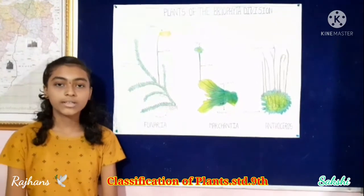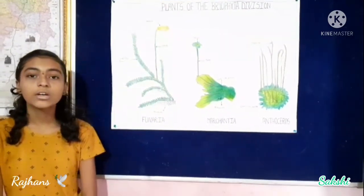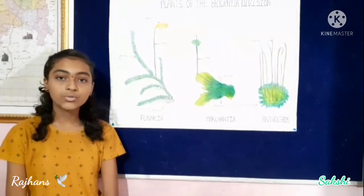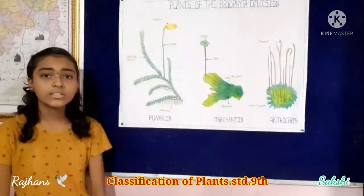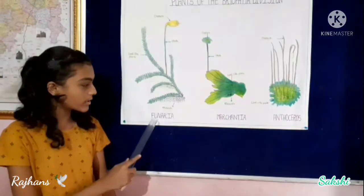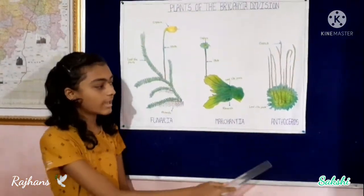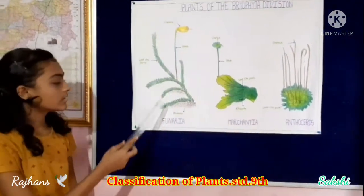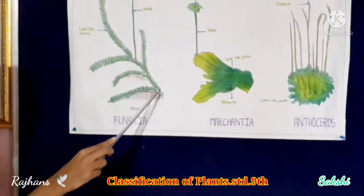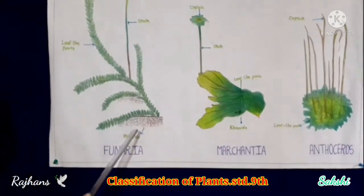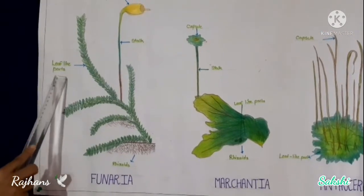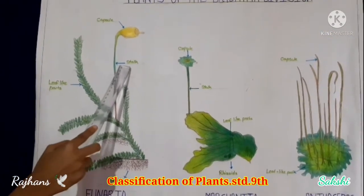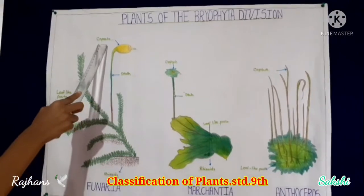They have a stem-like and leaf-like and root-like rhizoids. These are the examples: Funaria, Marchantia, and Anthoceros. This is Funaria — these are the rhizoids, also called roots of this plant. This is the leaf-like part, this is the stalk, and this is the capsule.